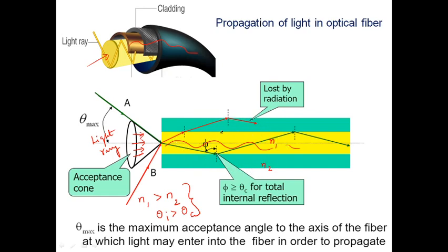The core and cladding are generally made of silicon dioxide. For example, if the refractive index of the core n1 is approximately 1.5, the cladding refractive index n2 should be around 1.46. Even this small variation is sufficient to enable the total internal reflection mechanism.